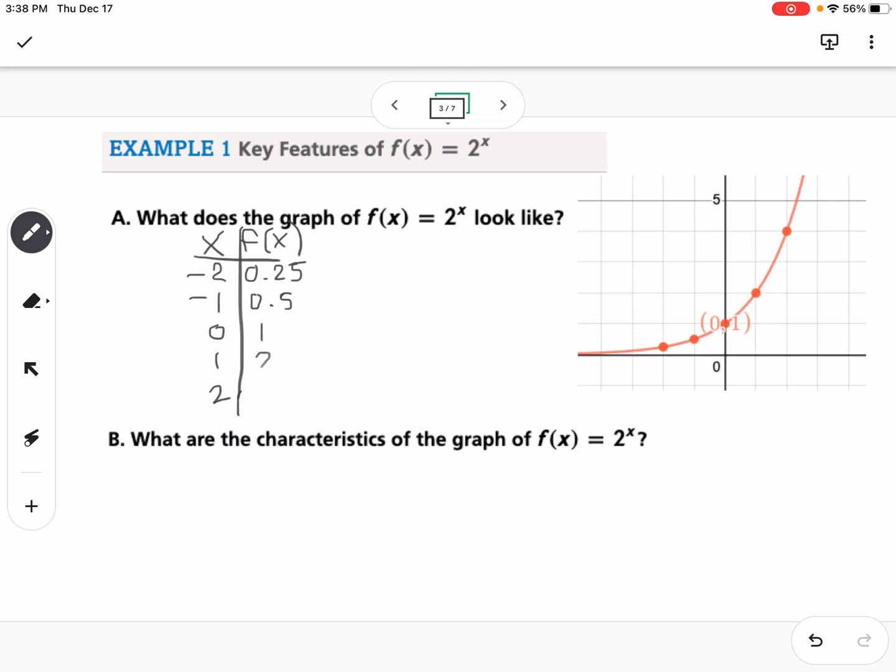2 to the first power is 2, and 2 squared is 4. If you're typing this into the Desmos or into your calculator, you're using like for this one, you would do 2 using that caret key to the second power, and that would give you 4. So you can see these values, we have a y-intercept at 0, 1. And then it asks, what are the characteristics of the graph of 2^x?